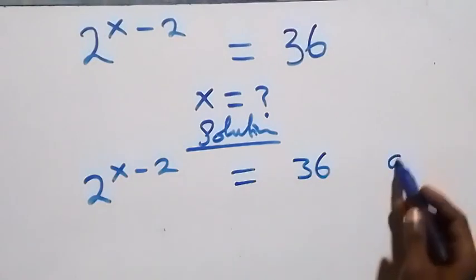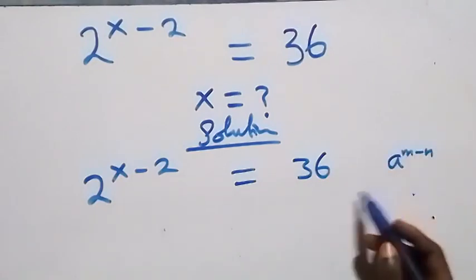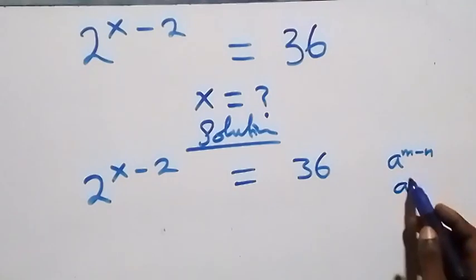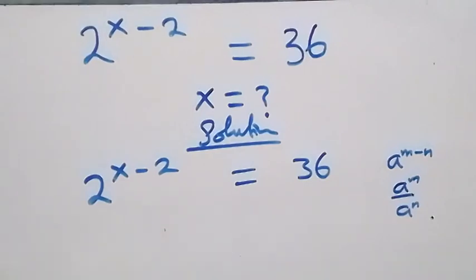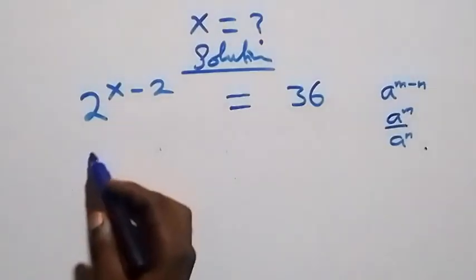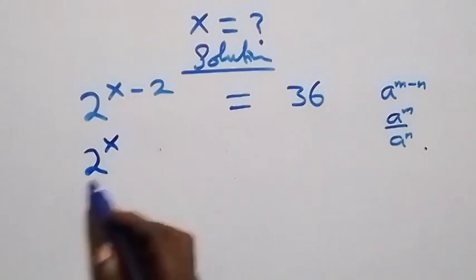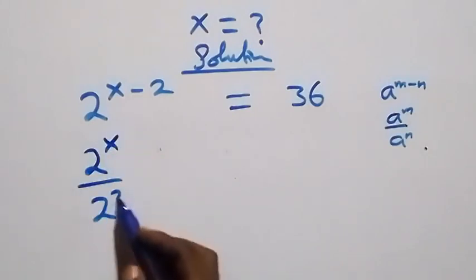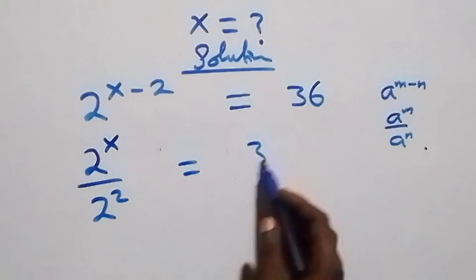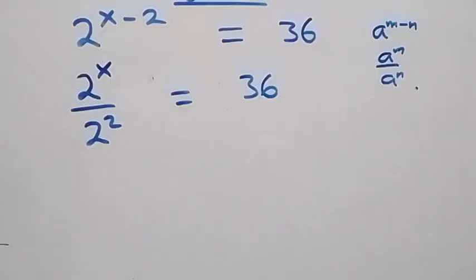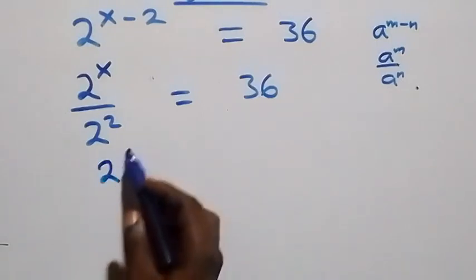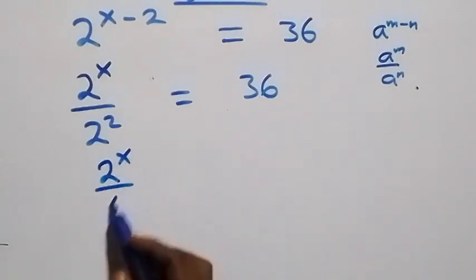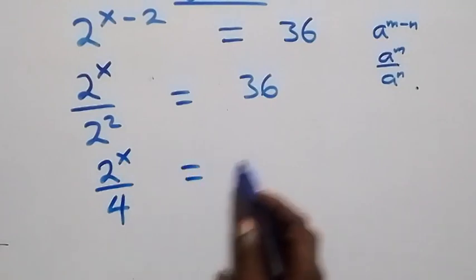What we have here follows: when we have a raised to power n minus n, this can be written as a raised to power n over a raised to power n. So this becomes 2 raised to power x over 2 raised to power 2, which equals 36.